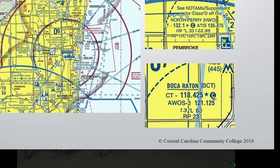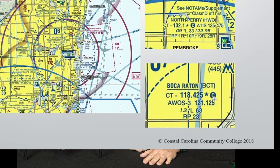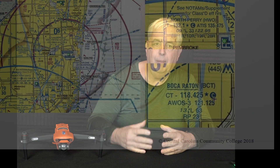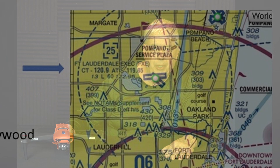I suggest you go into your book and look at various airports — look at the information right below them. For example, Boca Raton Airport: CT means control tower. What does the star mean? What does the C surrounded in black mean? AWOS — that's the frequency of the weather. What do all those symbols and numbers mean? Because it's all available to you.